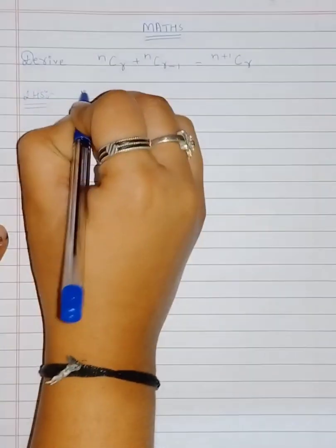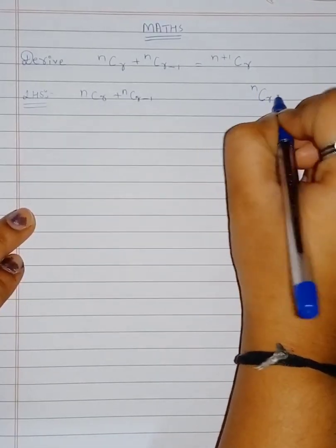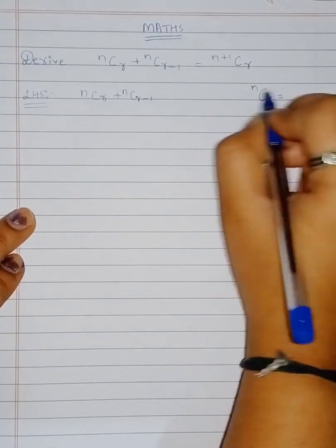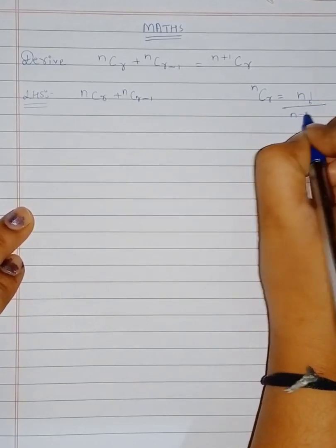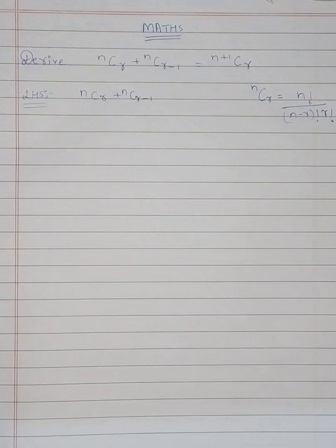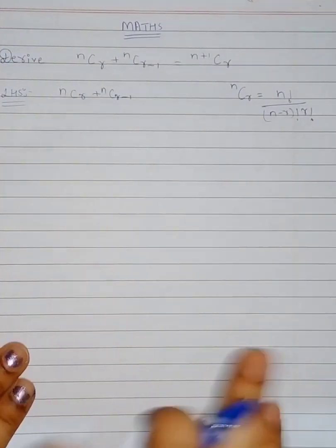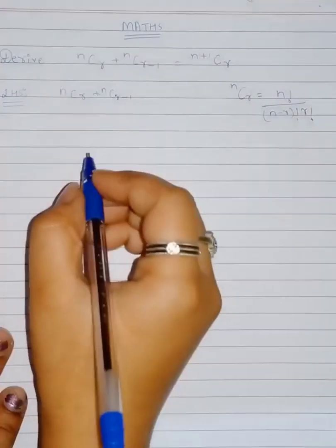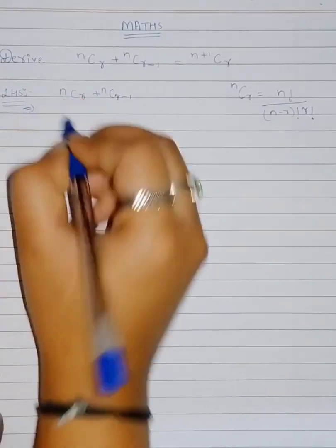LHS is ⁿCᵣ + ⁿCᵣ₋₁. For this derivation we should remember that ⁿCᵣ is equal to the formula n! divided by (n−r)! into r!. This is an important formula in the combinations chapter and one of the important formulas in permutations and combinations.